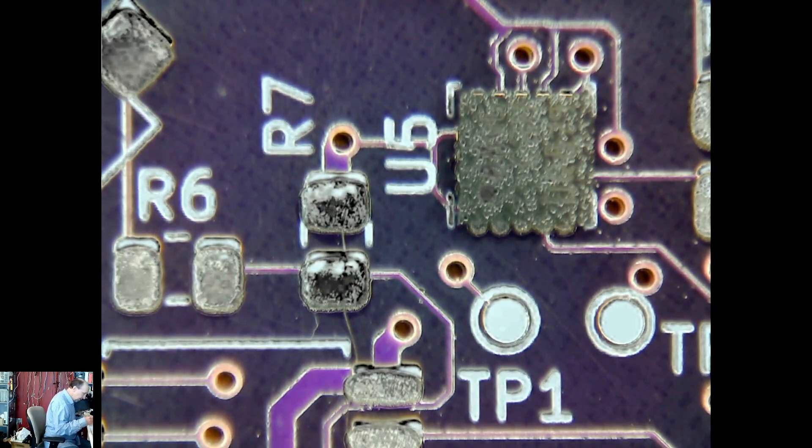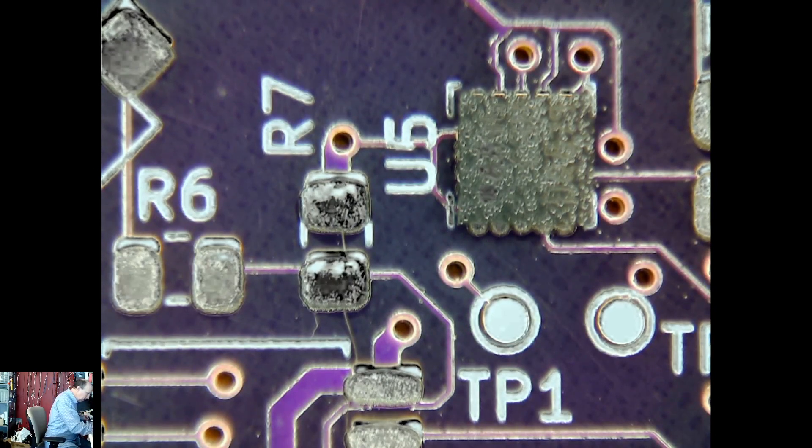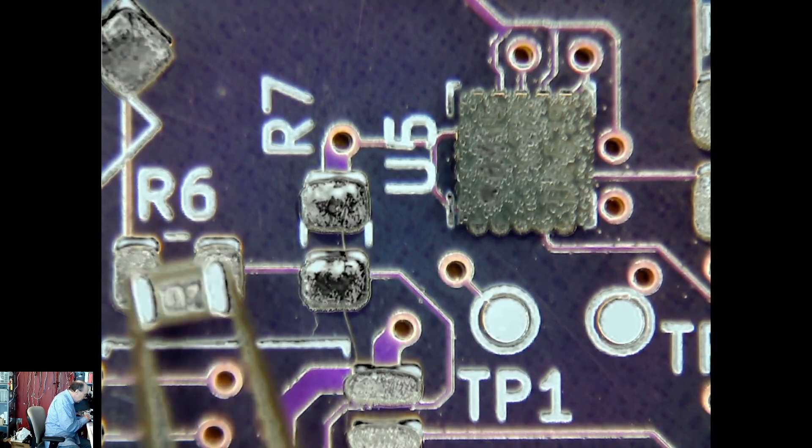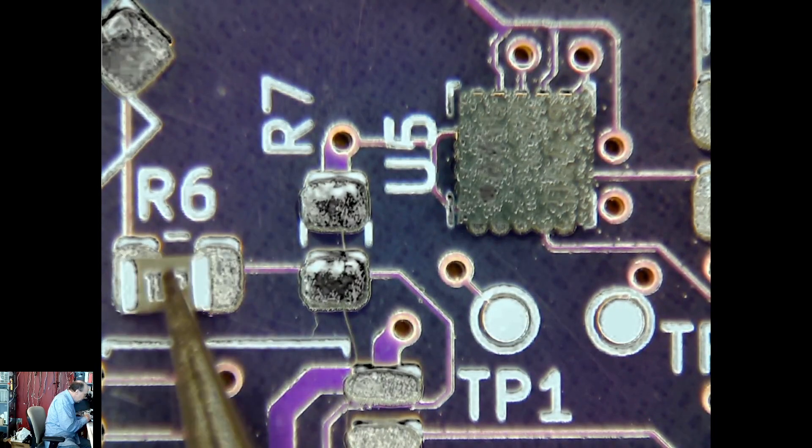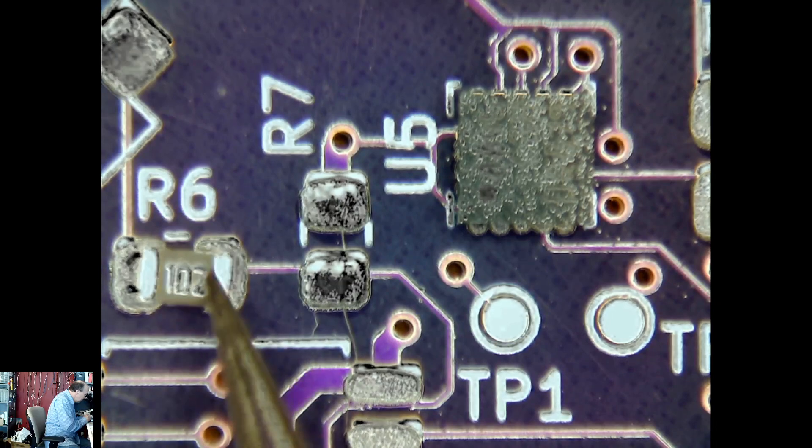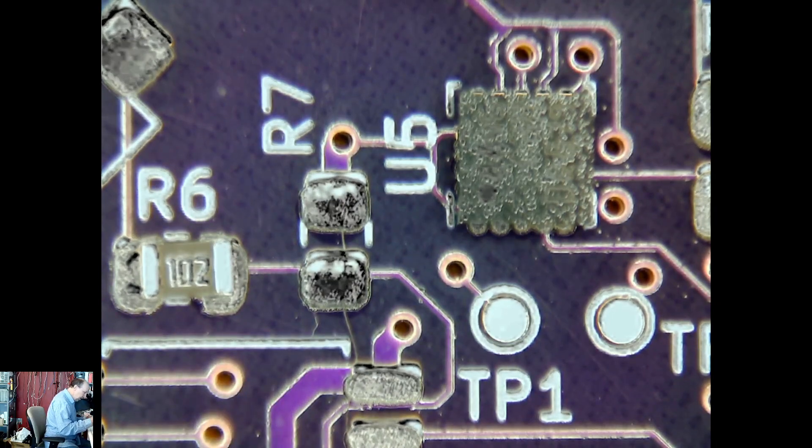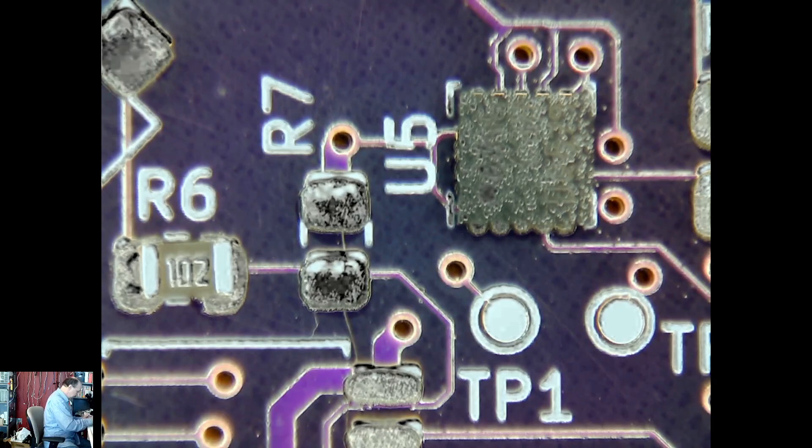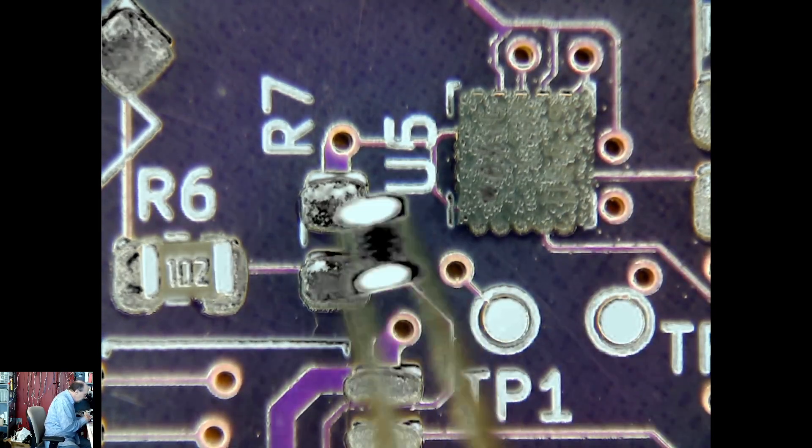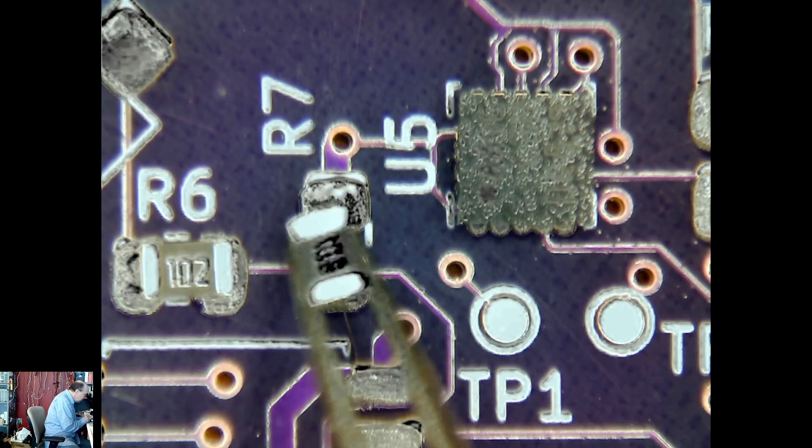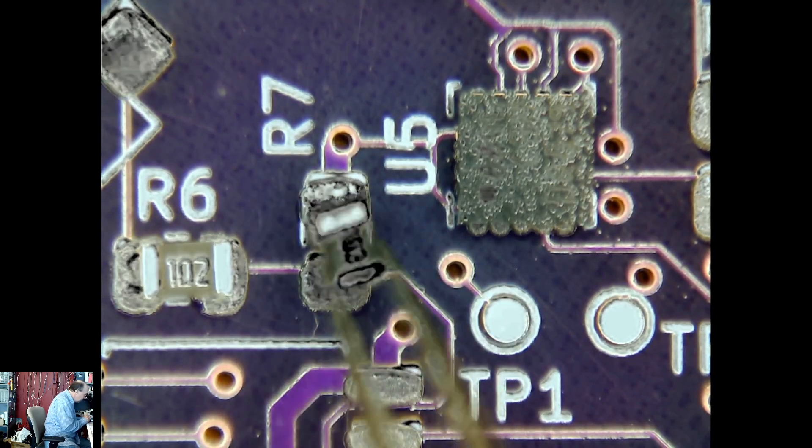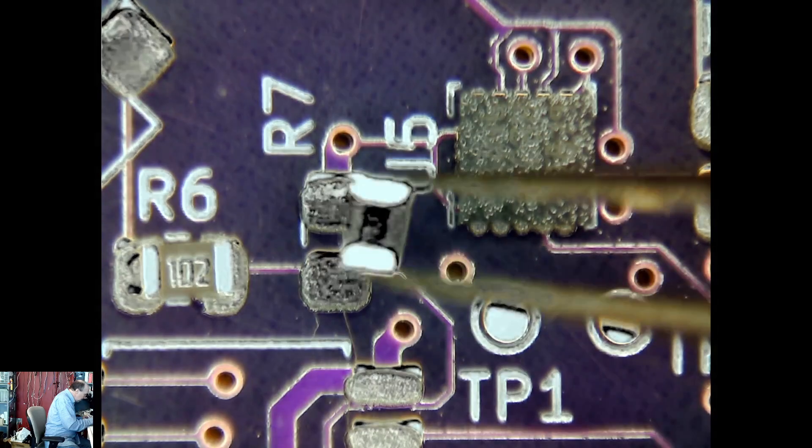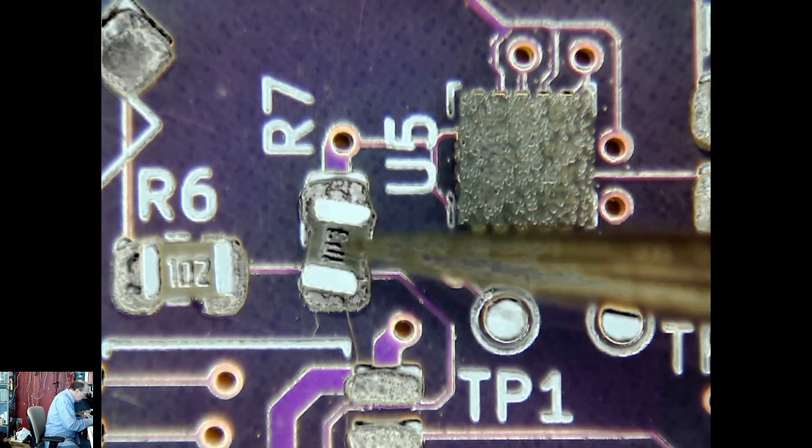R6 and R7. R6 is a 1K. R7 is a 1K. Let me flip that around to match the labels.